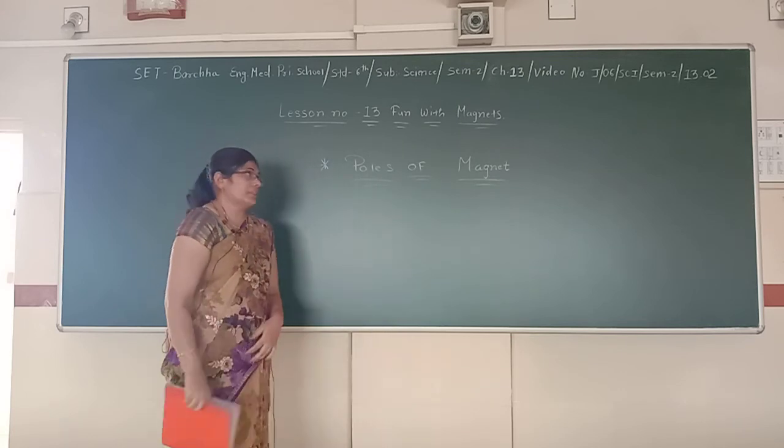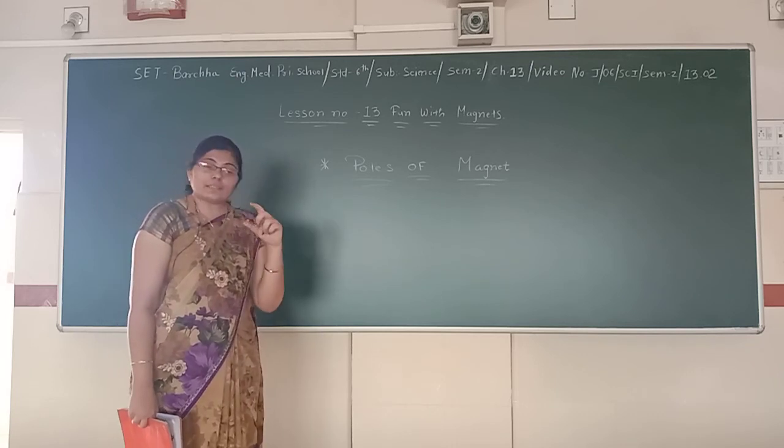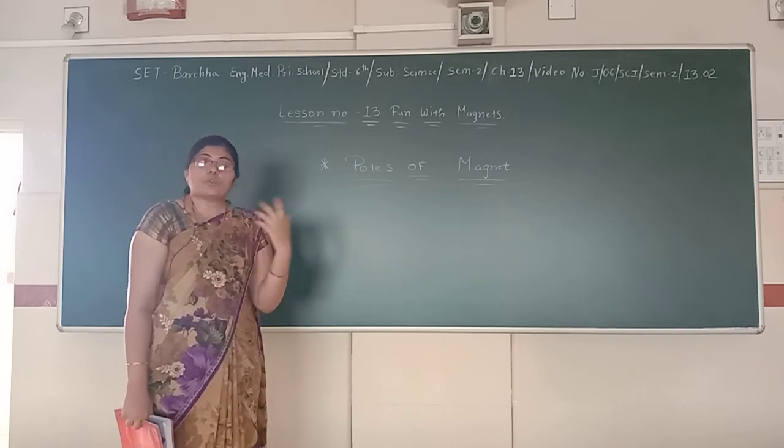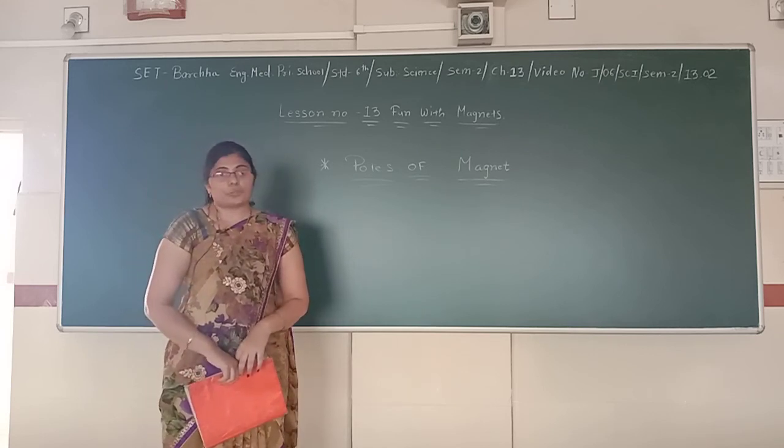What you learn from this: you learn that where the iron, cobalt, and nickel things attract more has more magnetic field. So here, lesson 13.2 is over.